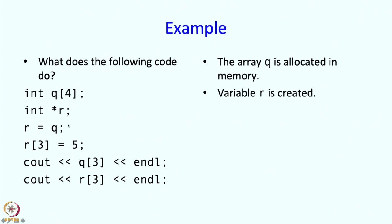So when you execute this, r will get the value q. What is the value of q? It is the starting address. So what will the value of r be? It will also be the starting address. So at this point, r and q will have the same value.